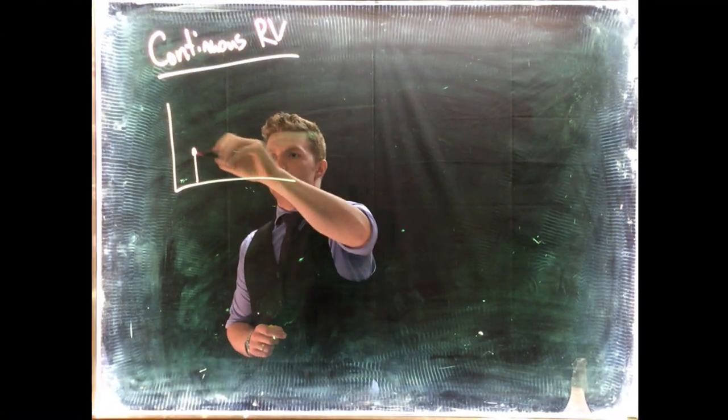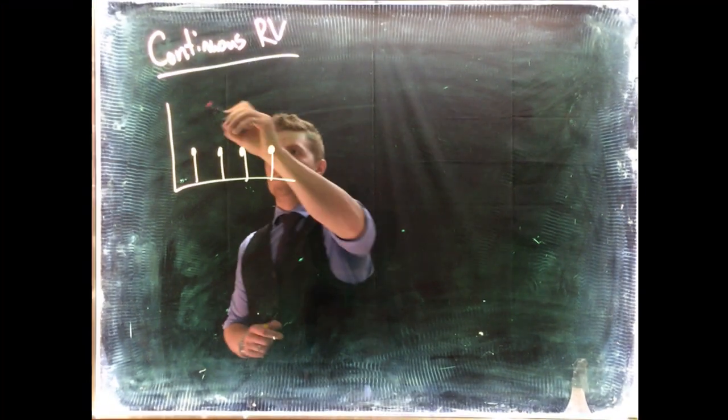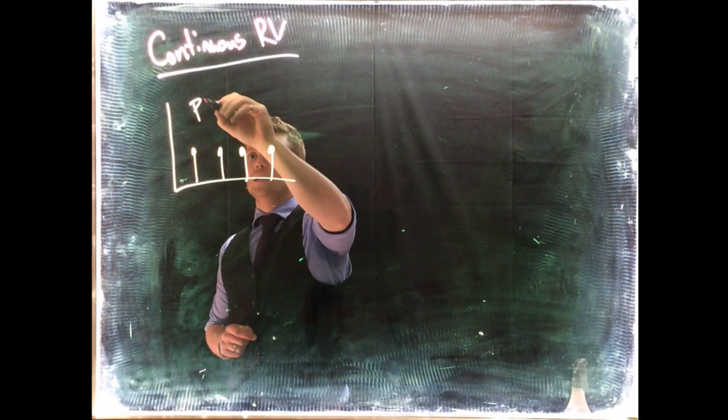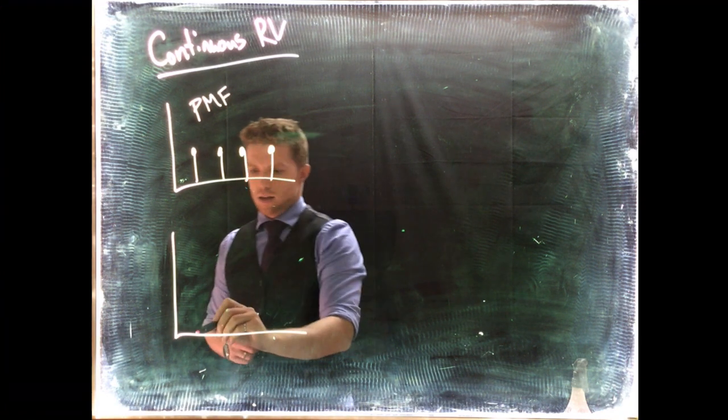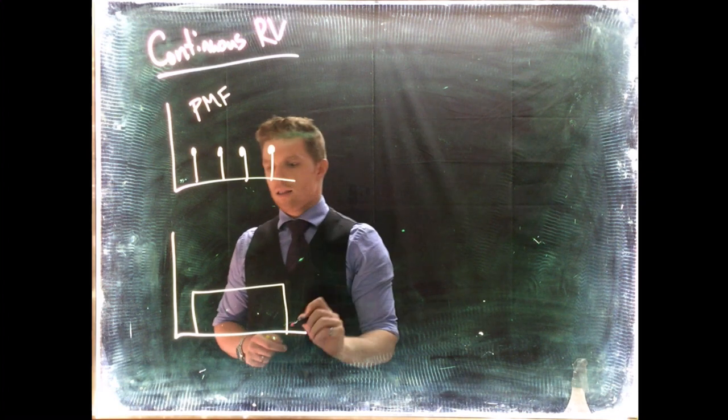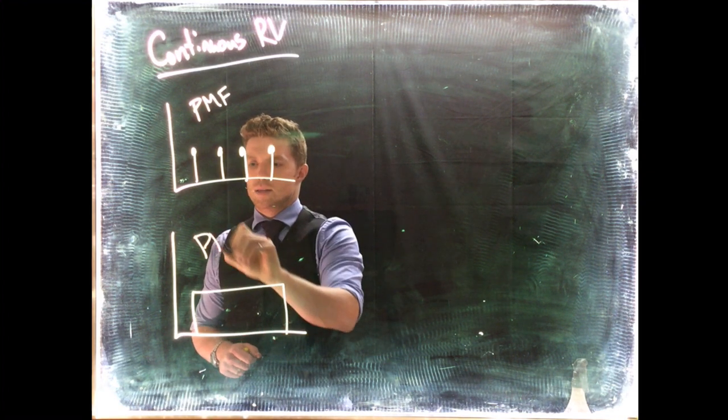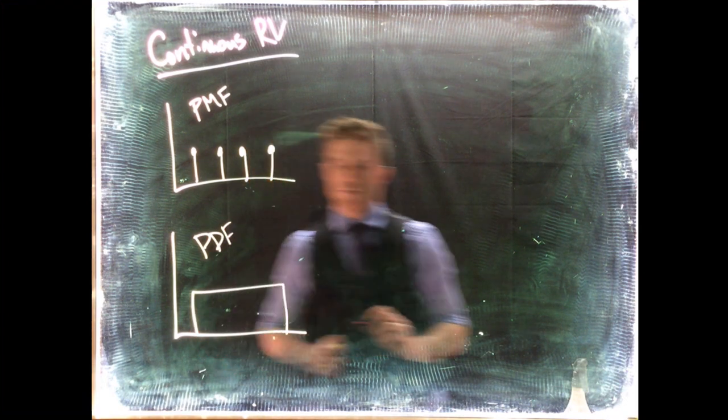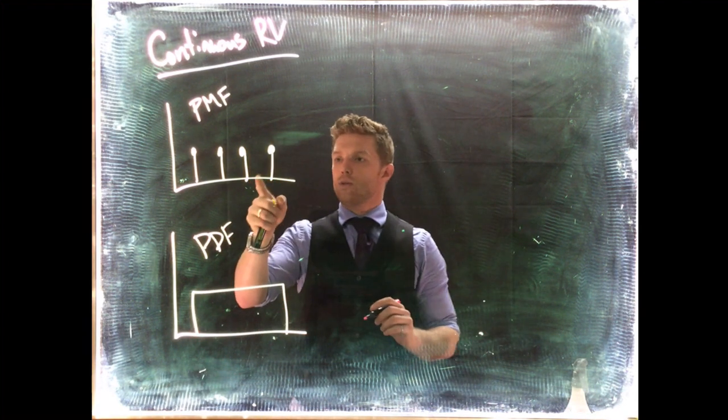the differences between uniform discrete—this would be uniform discrete, this is our probability mass function—and our analogous continuous distribution function where we would have our probability density function. We ended our discussion with how